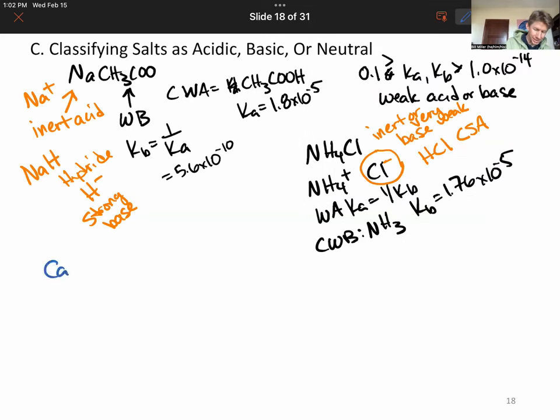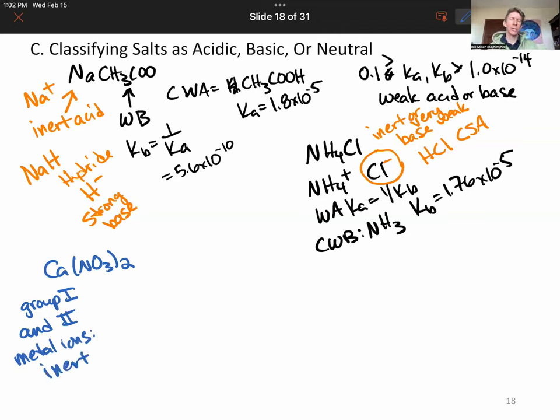Now a couple other examples we might do: calcium nitrate. Any of the group 1 and 2 metal ions are all inert.